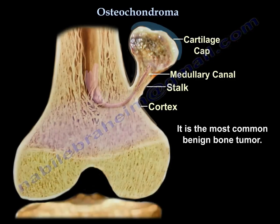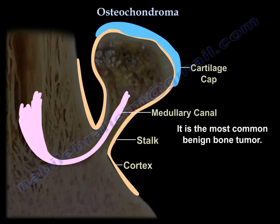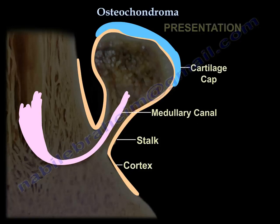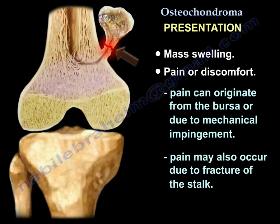It is the most common benign bone tumor. Presentation includes mass, swelling, pain or discomfort. The pain can occur from the bursa or mechanical impingement — it can impinge the muscles, the tendon, the nerve, or vessels. Pain can also occur from fracture of the stalk.